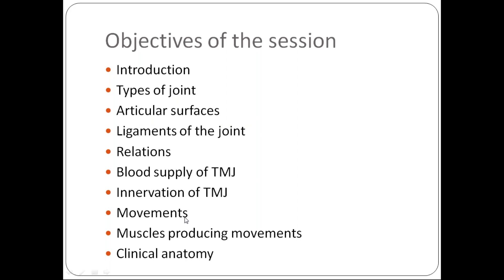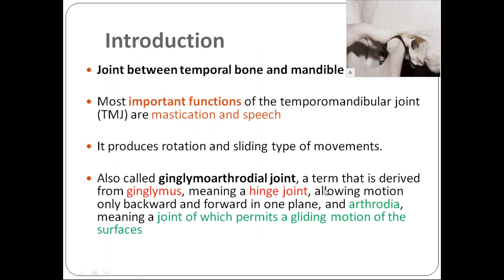The temporomandibular joint is a joint between the temporal bone and the mandible. Its most important functions are mastication and speech. It mainly produces rotation and sliding movement. It is also called the ginglymarthrodial joint — ginglymus meaning hinge joint, allowing only forward and backward movement, while arthrolia allows gliding movement.